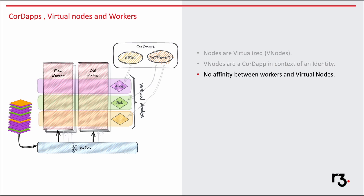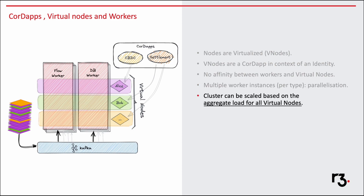Workers are agnostic to what work is being put on the message bus. So one flow worker can pick up the work from Alice for a CBDC app, or it can also pick up the work for Bob for Settlement Coda. Since we have multiple workers, each worker can simultaneously take up the work from Alice and Bob. Even if there is less work for Bob and more work for Alice, it's okay — the cluster will scale on an aggregate level and is not specific to a particular virtual node.